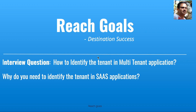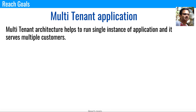Hello everyone, welcome to Reach Goals. Today I have two related questions: how to identify the tenant in a multi-tenant application, and why do you need to identify the tenant in SaaS applications. Multi-tenant architecture helps to run a single instance of an application that serves multiple customers. Applications like Gmail, Yahoo, GitHub, and Workday all work in multi-tenant architecture — the backend is common and serves multiple customers based on their subscription or need.